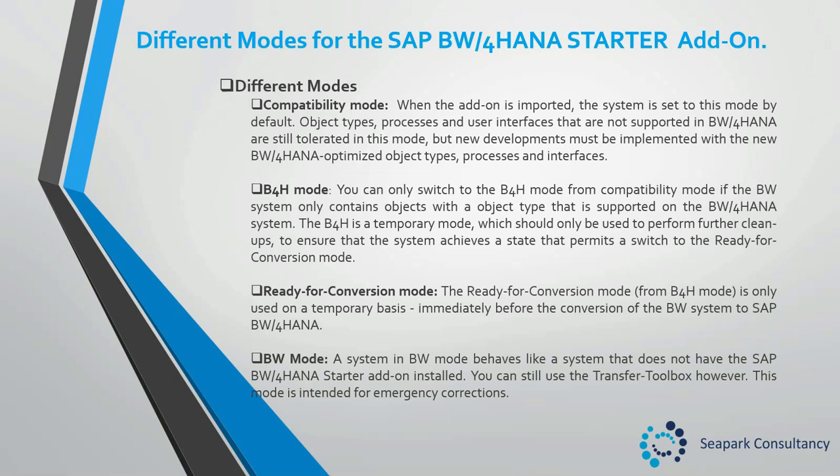Different modes for the BW4HANA starter add-on. Once the BW4HANA starter add-on is installed on the BW7.5 system, you have the option of four different mode types. The first mode type is the compatibility mode. When the add-on is imported, the system is set to this mode by default. Object types, processes, and user interfaces that are not supported in BW4HANA are still tolerated in this mode, but new developments must be implemented with the new BW4HANA optimized object types, processes, and interfaces. For example, you can still load to an InfoCube object, but cannot create a new InfoCube in your BW development system.